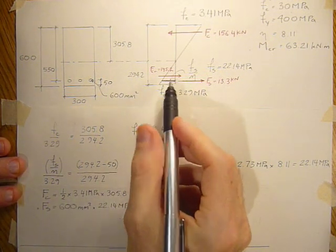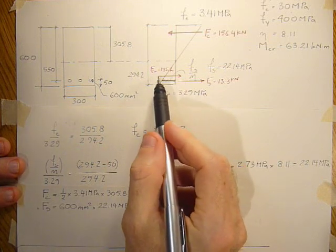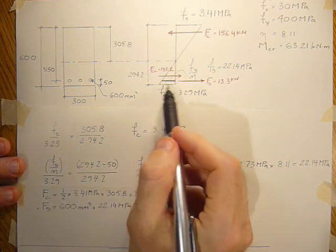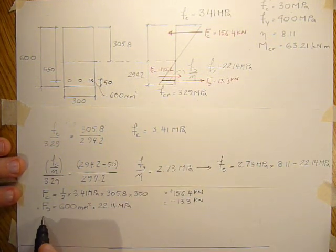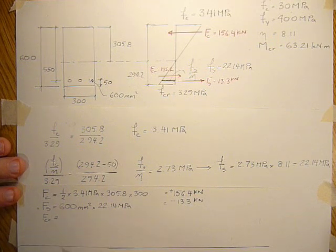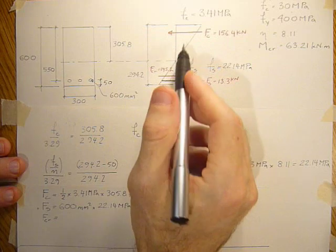And then the last component would be the concrete below the axis that's just upon the verge of cracking for that 3.29 MPa stress. So the force CR would be similar to how we calculated the above force.